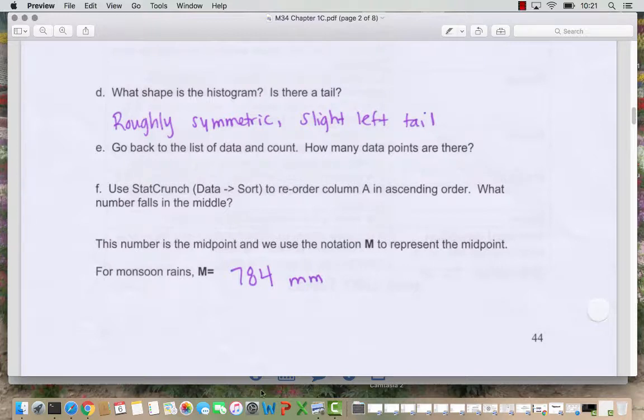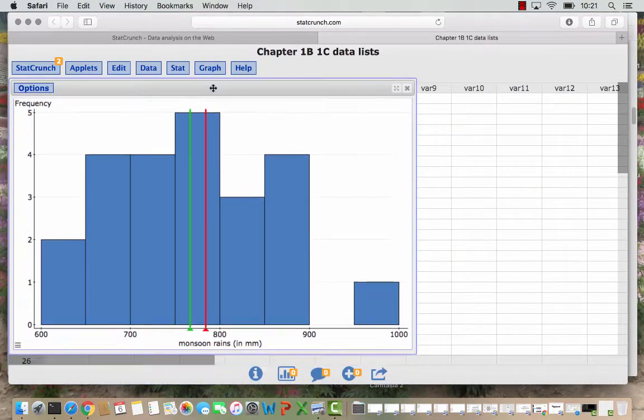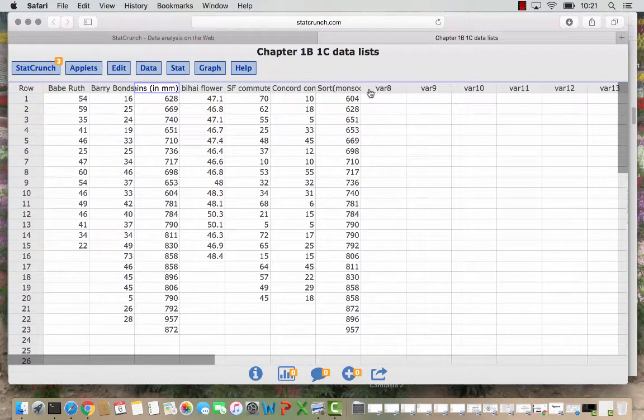So we want to sort in order and we did that already and then figure out what number falls in the middle. So let's look back at our sorted data. In our sorted data there are 23 data points. So the middle is going to be the 12th data point. You could think about well what's 23 divided by 2. That's 11 and a half and then if we round up the 12th spot will be in the middle. And so we see here is this value 784 millimeters. So that's our midpoint or our median.